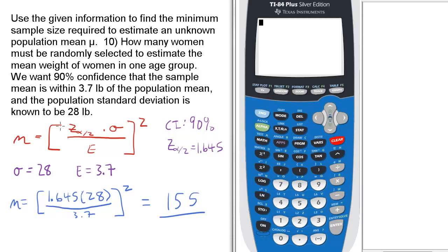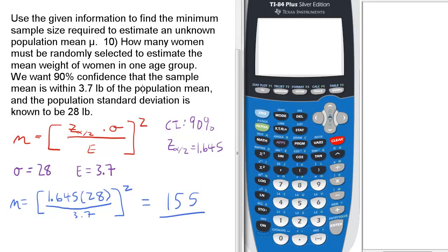So in this case, some of the givens: the confidence interval is 90%, the z alpha over 2 equivalent to the confidence interval of 90% is 1.645, because we want the sample mean within 3.7 pounds of the population mean, meaning 3.7 pounds plus or minus.